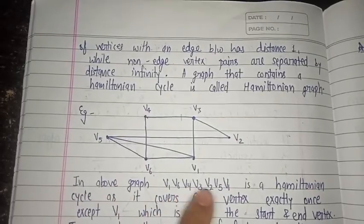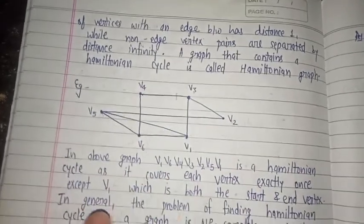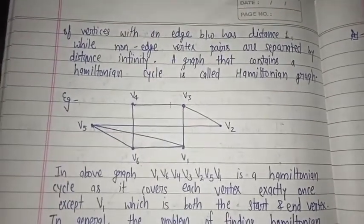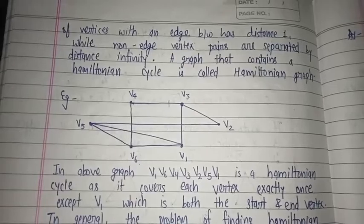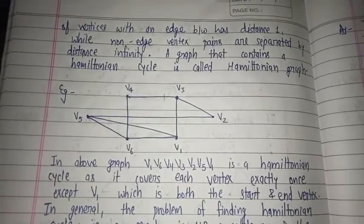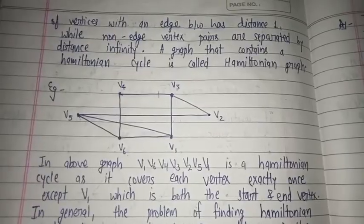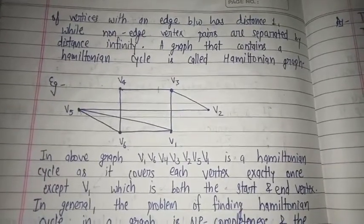So in the above graph, V1, V6, V2, V4 is a Hamiltonian cycle as it covers each vertex exactly once, except V1 which is both the start and end vertex.